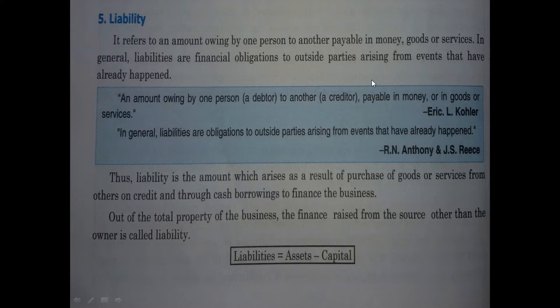In simple words, whatever finance or credit you have raised in your business, all of that is your liability. The main formula for liabilities — which will be used in the accounting equation chapter — is: liabilities equal to assets minus capital. Capital is the initial amount the owner puts into the business.